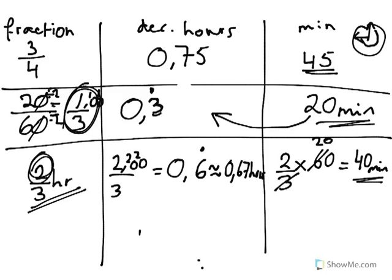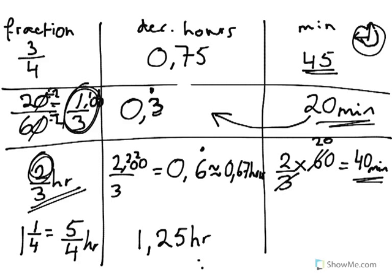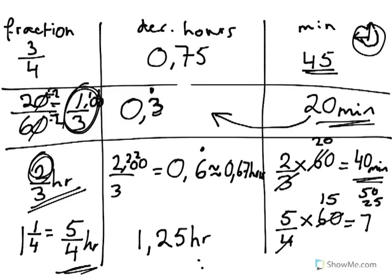What if we have a number of hours bigger than 1? We have 1.25 hours. As a fraction, we know 0.25 is a quarter, so 1.25 hours is equivalent to 1 and a quarter, which can also be written as 5 over 4 hours. To convert to minutes, we take the fraction 5 over 4 and multiply by 60. 4 into 60 goes 15 times, then we do 5 times 15: 5 tens are 50 and 5 fives are 25, giving us 75 minutes. So 1.25 hours is the same as 75 minutes.